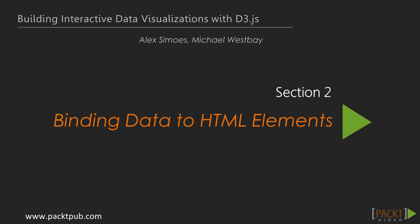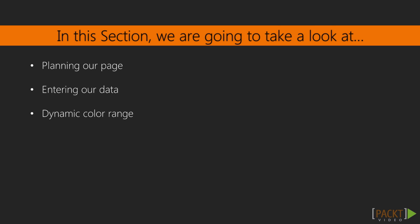Building off the fundamentals from the previous section, we'll now put them to use in creating a dynamic page built entirely using D3. The data we will use to drive the page will be in the form of a JSON array, which will get us ready for using D3's Ajax methods to query the server for data.